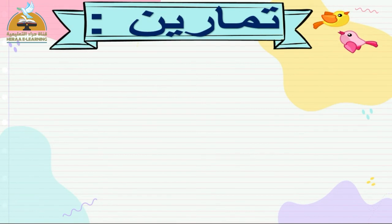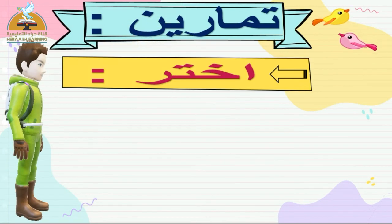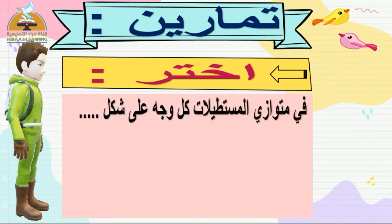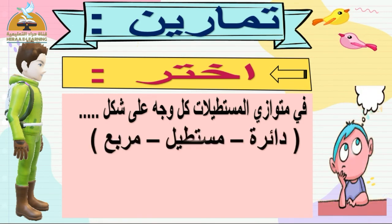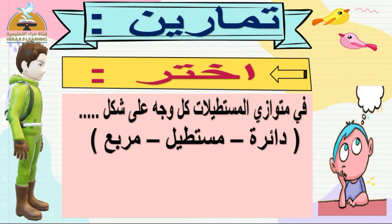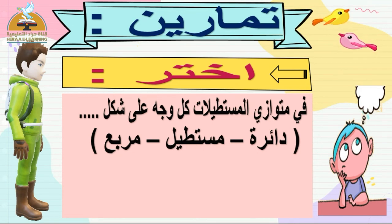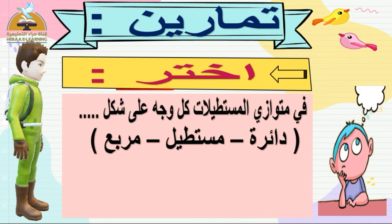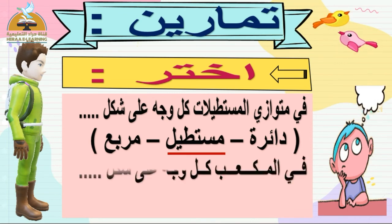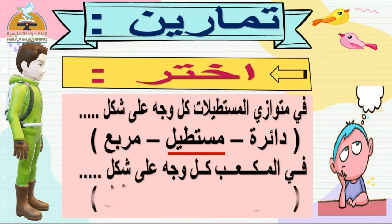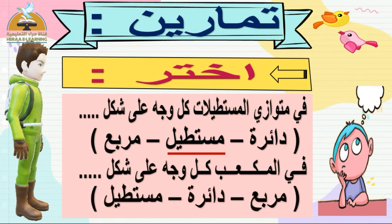يلا نشوف التمارين على درسنا الجميل. عنوان التمرين: أفكر. بيقول: متوازي المستطيلات كل وجه على شكل ايه؟ كل وجه من أوجهه على شكل دائرة ولا مستطيل ولا مربع؟ طبعا متوازي المستطيلات بيّن من اسمه: كل وجه على شكل مستطيل. وفي المكعب: كل وجه على شكل مربع.